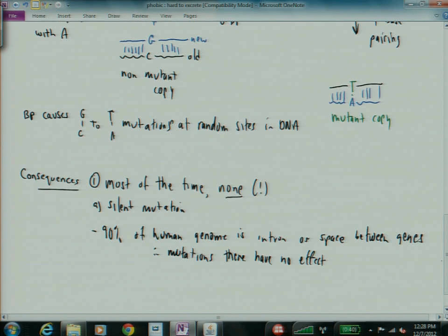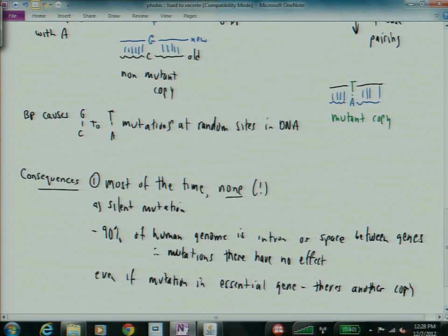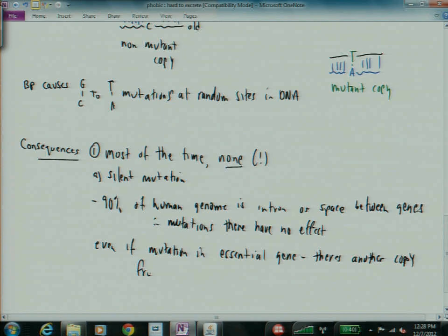Even if mutation in essential gene, there's another copy, a copy from your other parent. So if the one from your dad got mutated, you still have the copy from your mom.